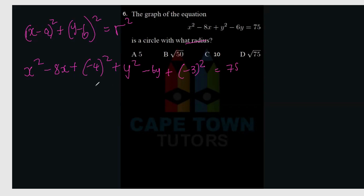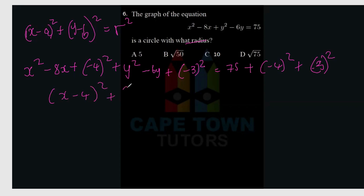Whatever you add on the left hand side, you have to add on the right hand side as well. So we add negative 4 squared and negative 3 squared to the right side. Factorizing gives us x minus 4 squared plus y minus 3 squared equals 75 plus 16 plus 9.